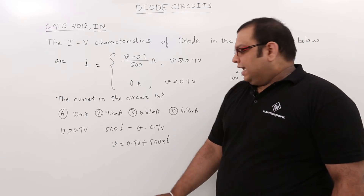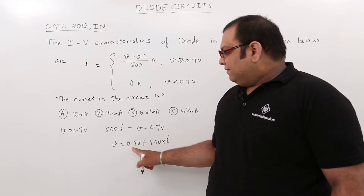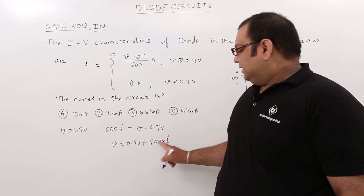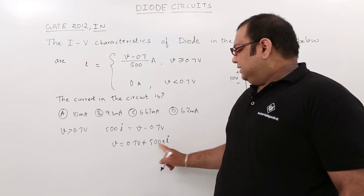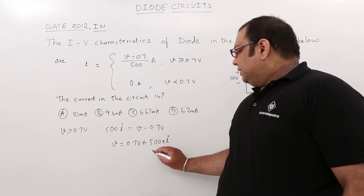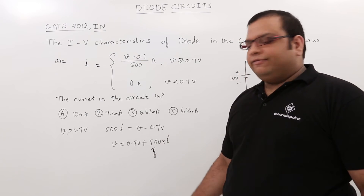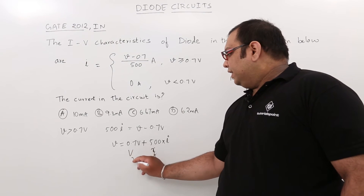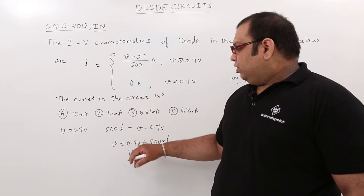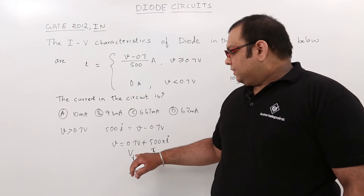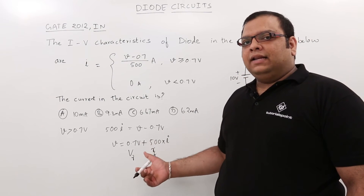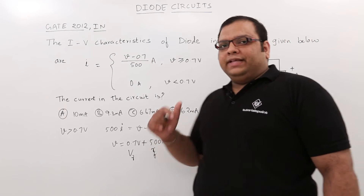If you observe this carefully, the 0.7 is the voltage across the forward biased diode, and 500 × I is a voltage drop across a resistance, so 500 ohms is the forward biased resistance Rf, and 0.7 V is the cut-in voltage V-gamma. When the diode is forward biased, we replace it with the cut-in voltage and the forward biased resistance — the practical equivalent.